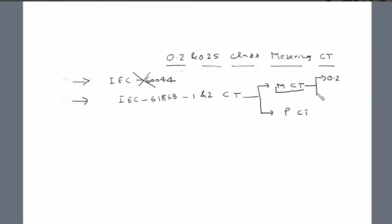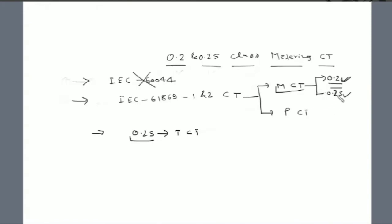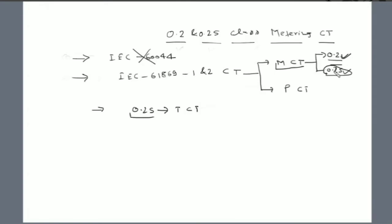In substations we mostly use 0.2 or 0.2S class CT. The difference is where we will use 0.2 and where we will use 0.2S. The 0.2S class CT is used mostly for tariff metering applications — that is, for revenue metering purpose, 0.2S class CT is preferred over 0.2 class CT.